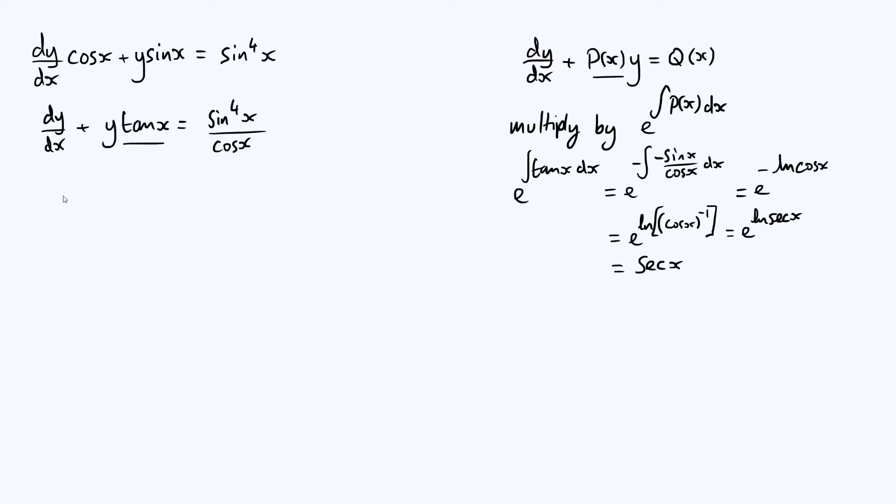Let's multiply through by that. We're going to get sec x dy/dx plus y sec x tan x. On the right-hand side, I'm going to leave the sec as 1 over cos because we've already got a cos there. And so we can write that as sin to the 4 of x over cos squared of x.